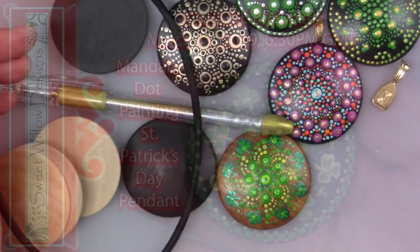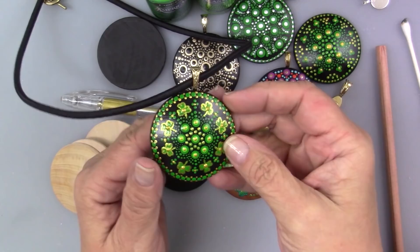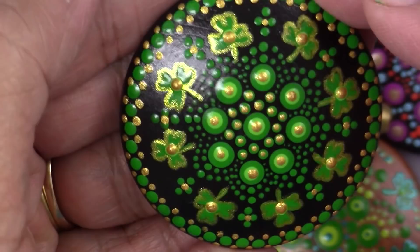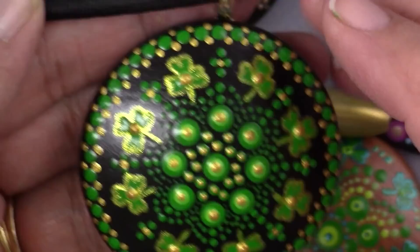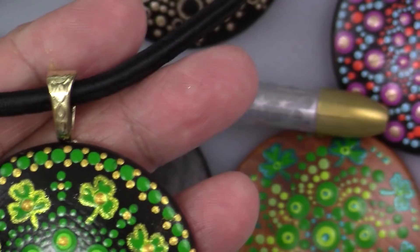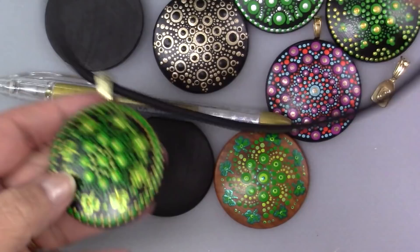So here's a close-up of the pendant that we're going to be doing. It's really pretty using St. Patrick's Day colors. We've got some nice greens here and these little shamrocks and a little braided edge. We'll be using a glue-on bail and that way you can customize the necklace that you would like to use with the clasp.